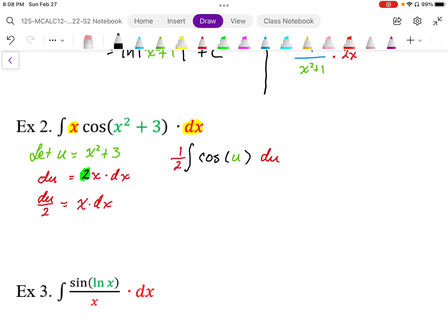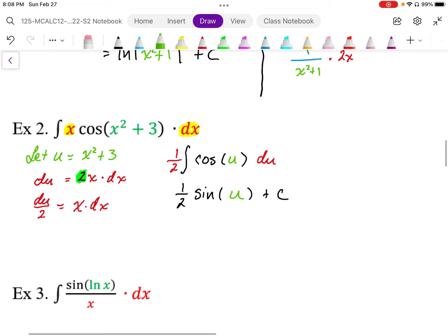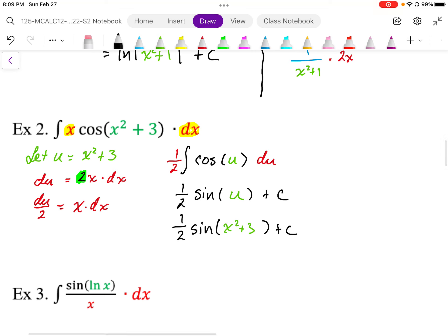Anti-differentiating this, the anti-derivative of cos is sine. I did this in terms of u. I don't want u in my answer, so I'll replace u with x² + 3. There's the anti-derivative: (1/2)sin(x² + 3) + C.